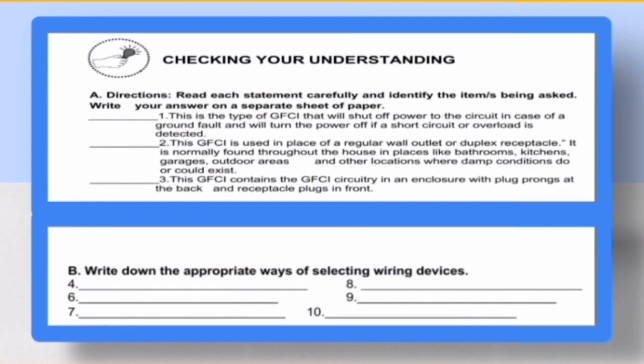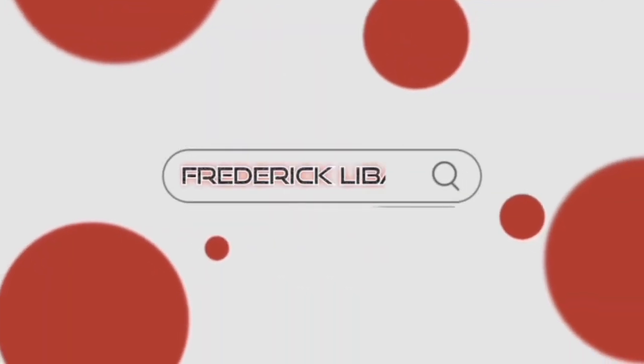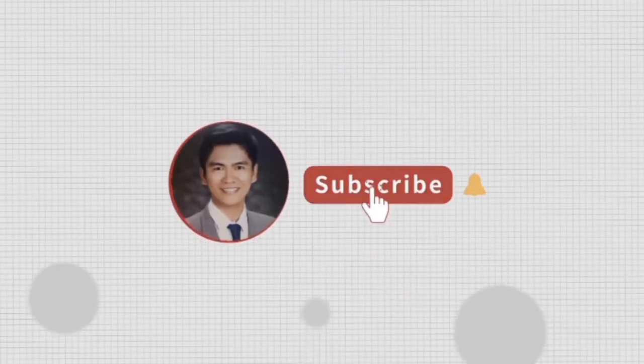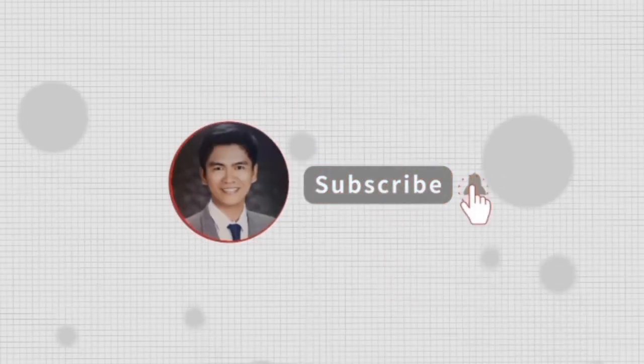Checking your understanding. Read each statement carefully and identify the items being asked. Write your answer on a separate sheet of paper and turn in the picture of your answer in our Google Classroom. This ends our lesson and if you want to be updated on my next lesson, click the subscribe button.